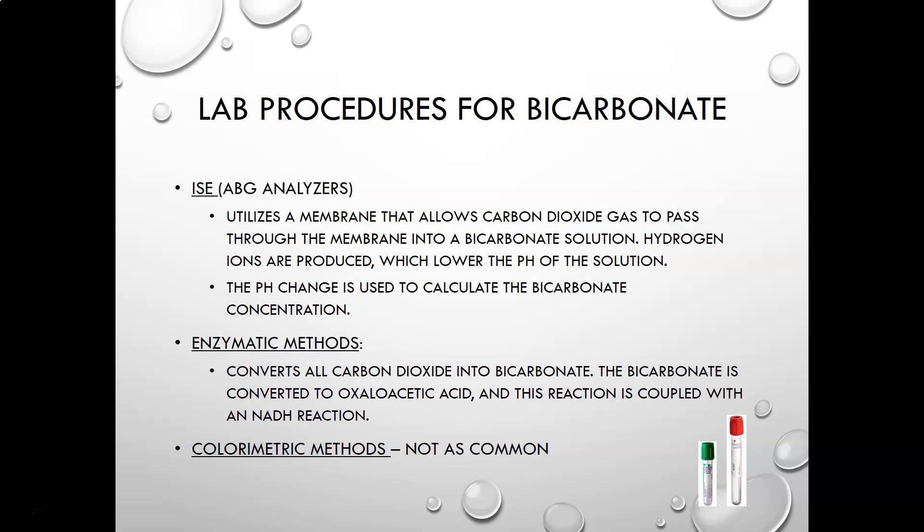The procedures to measure bicarbonate: ABG analyzers usually use an ion-selective electrode where the membrane allows CO2 gas to pass through into a bicarbonate solution, producing hydrogen ions that lower the pH of the solution. That pH change is used to calculate the bicarbonate concentration, so it is a calculated value based on the pH. The enzymatic method — used on most large analyzers that run BMP and CMP panels — converts all carbon dioxide into bicarbonate, then converts bicarbonate to oxaloacetic acid. That reaction is coupled with an NADH reaction, which is measured and is proportional to the bicarbonate concentration.